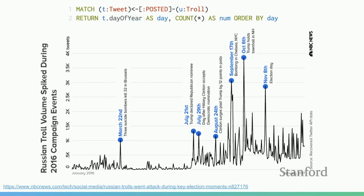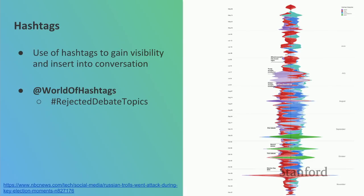Looking at tweet volume by day, we can see a lot of these troll accounts latched onto events like terrorist attacks, when Trump won the nomination, and leading up to election day — where we see a huge spike in activity. The takeaway is that there was a lot of attempt to amplify confusion and division that was going on in reality. Hashtags played a big part in this.